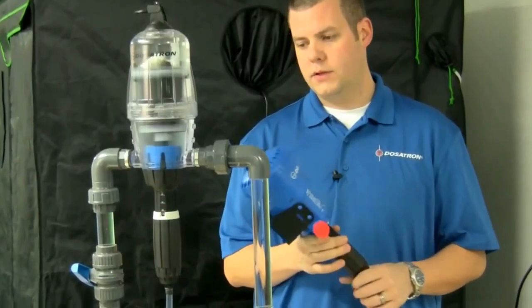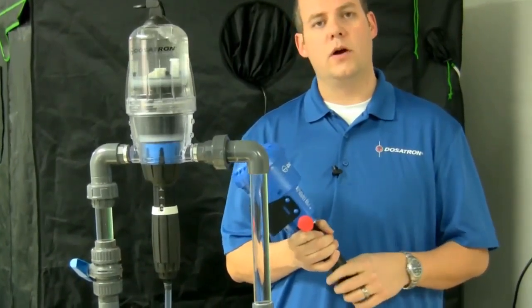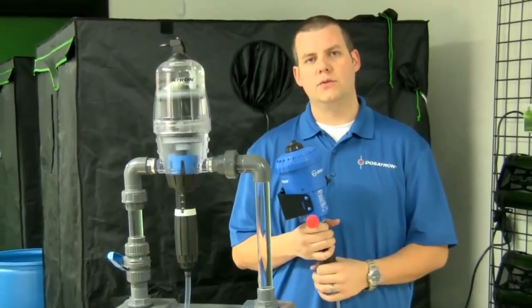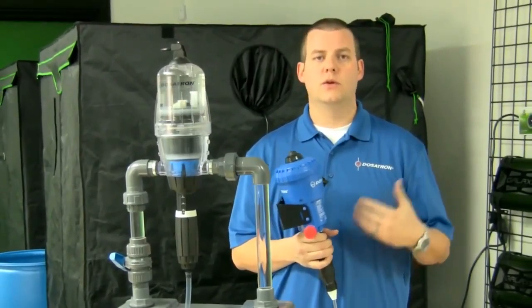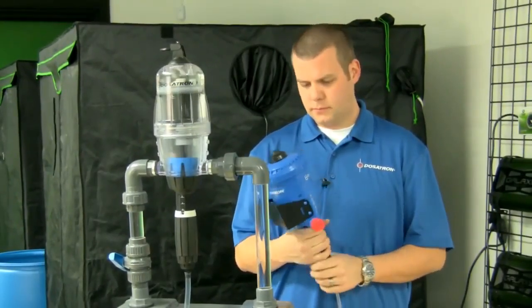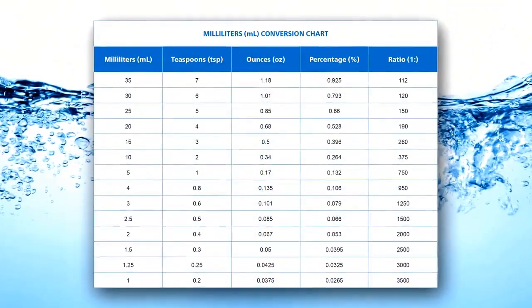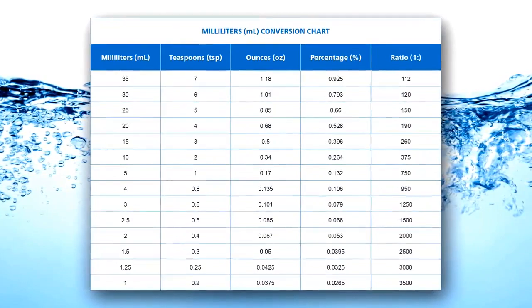Now, all of the Dosatrons are going to come in what we call ratio and percentage. So we've translated that into milliliters per gallon or teaspoons per gallon. Each unit will come with a sticker right on the unit that will break that conversion down and make it a little easier to do the math.